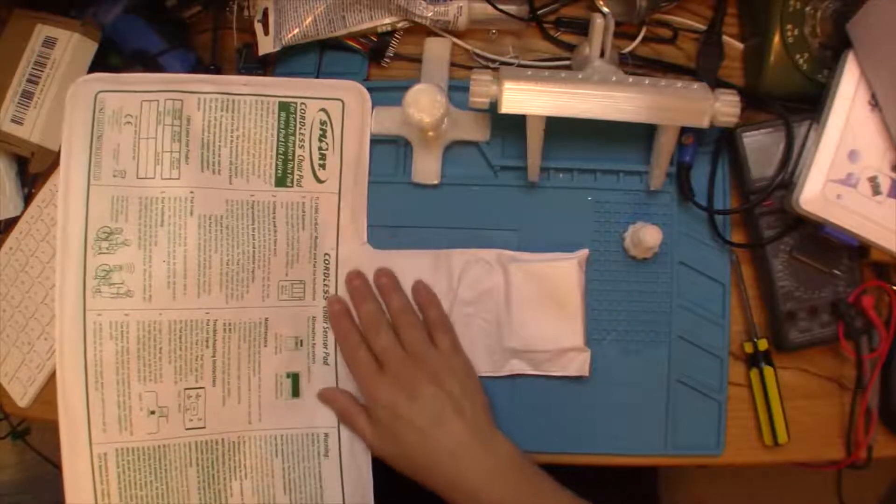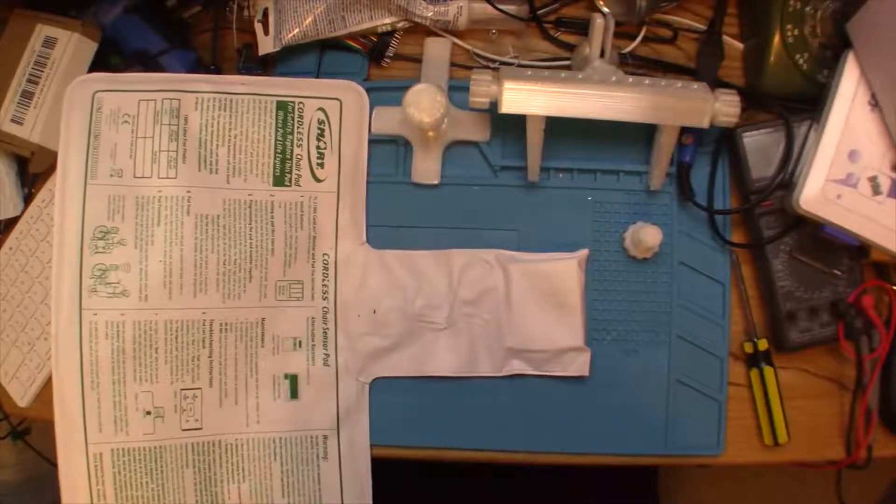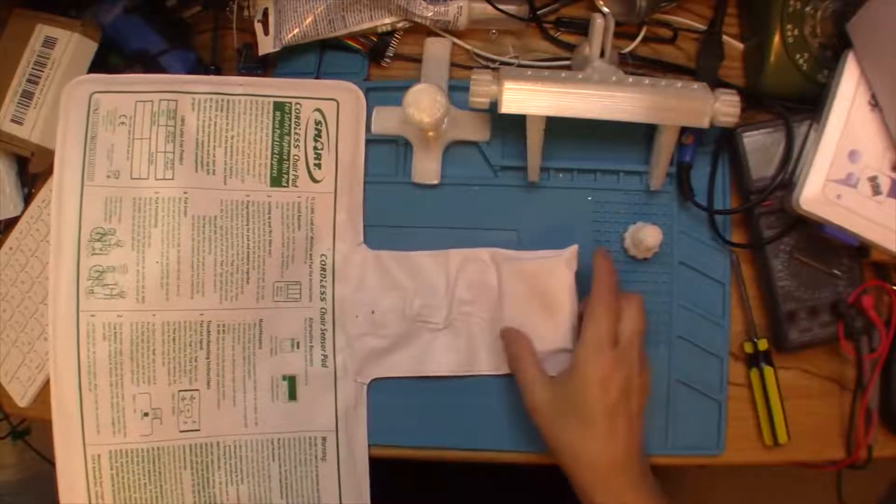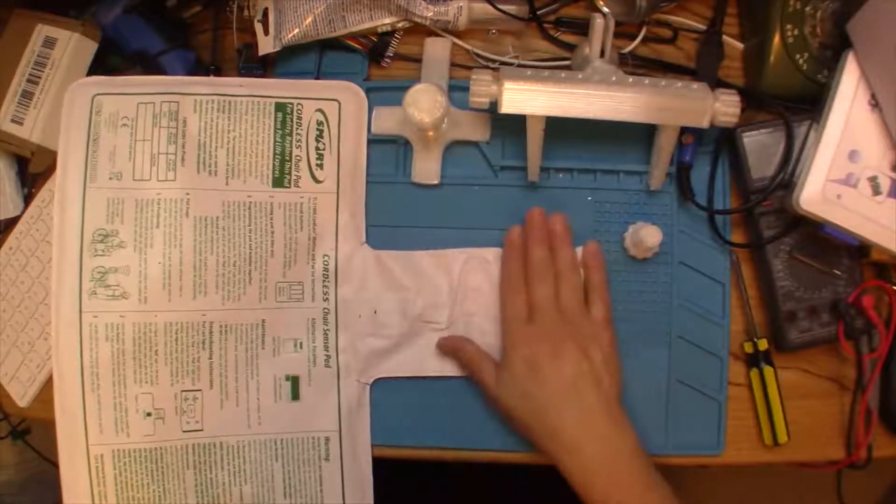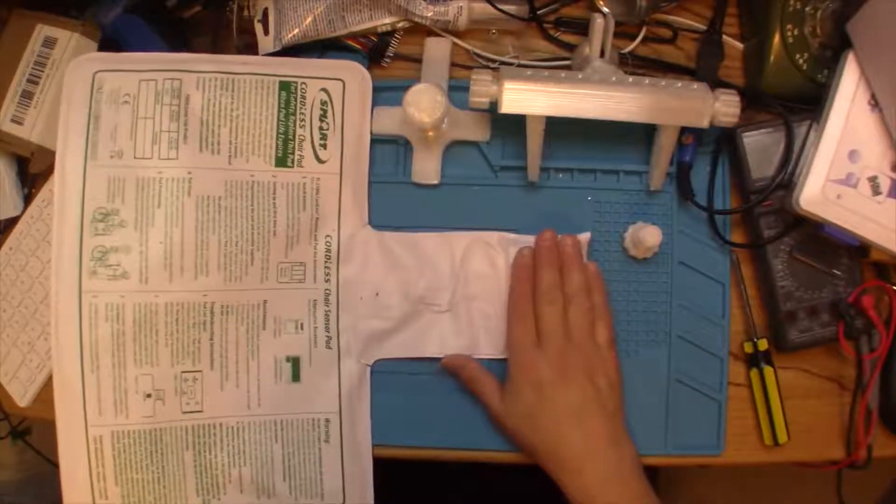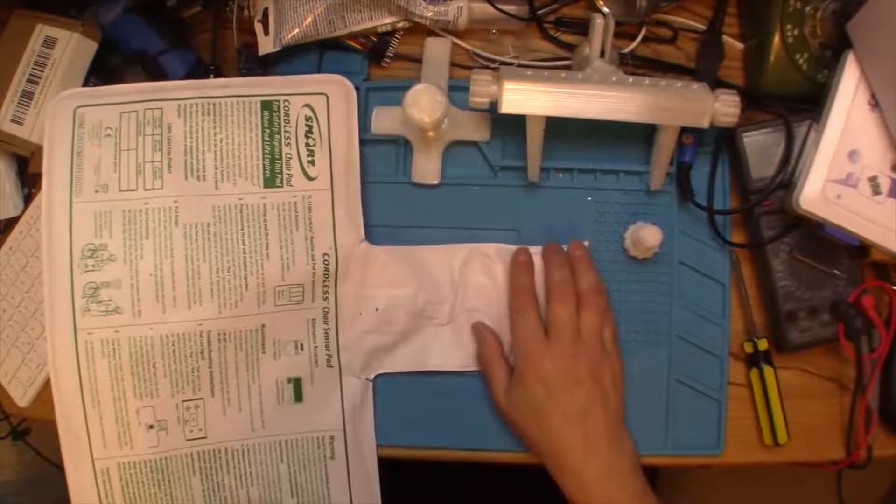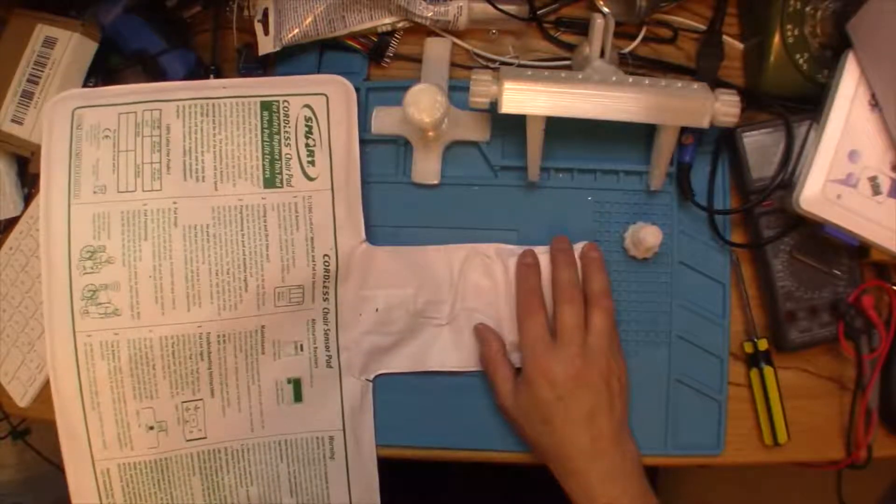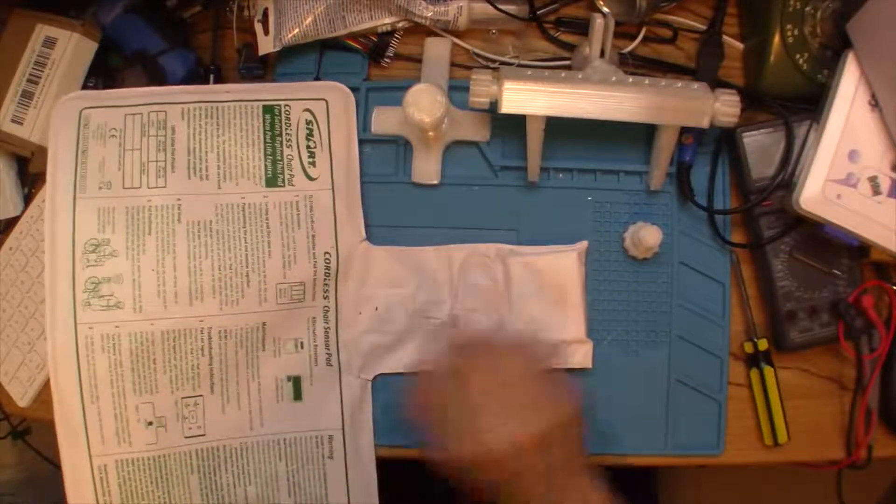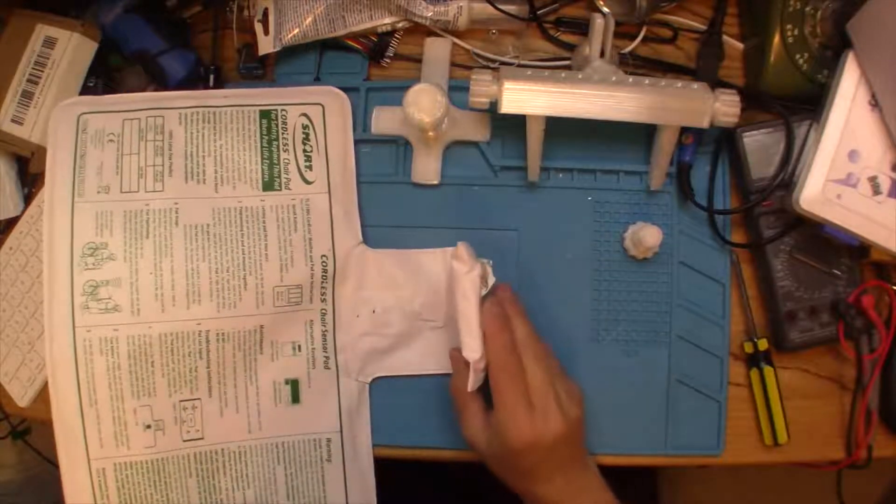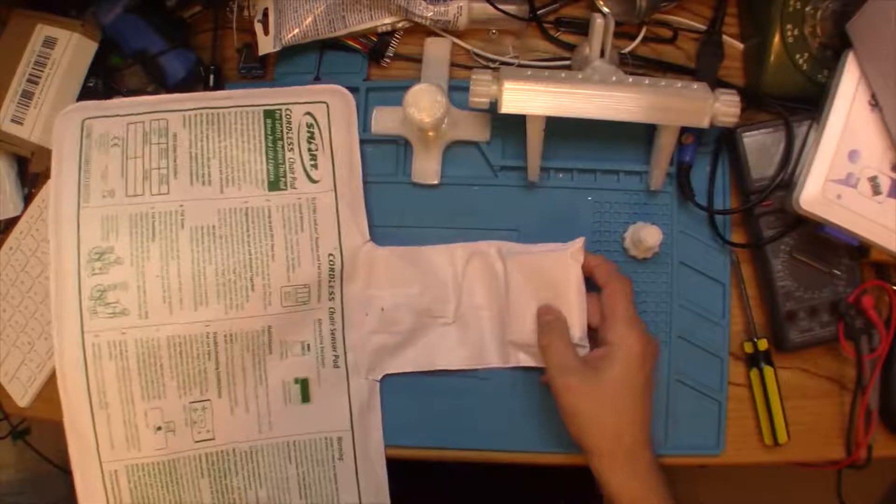This is one of the chair alarms that we use. They're about $70 to $100 and some a piece. They connect to a wireless system that we bought and overall it works pretty good. It's helped us keep her from falling many, many times. We know when she gets up at night or if I fall asleep in my chair sitting next to her.